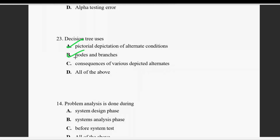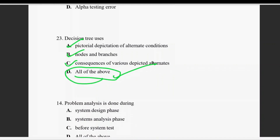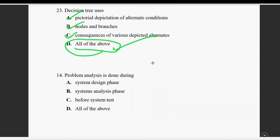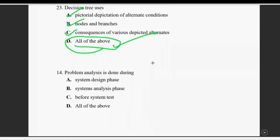Question 23: a decision table uses pictorial representation of alternative conditions. It has nodes and branches, and depicts the consequences of various alternatives. The right answer is all of the above.